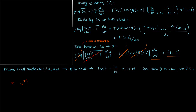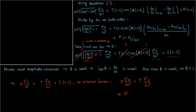Mu times the second partial of u with respect to t equals the tension times the second partial of u with respect to x, plus small f as a function of x and t. Now in the event that there are no external forces acting on the string, we can simplify this partial differential equation by cutting out the small f. And here c squared is just the ratio of the tension to the density.